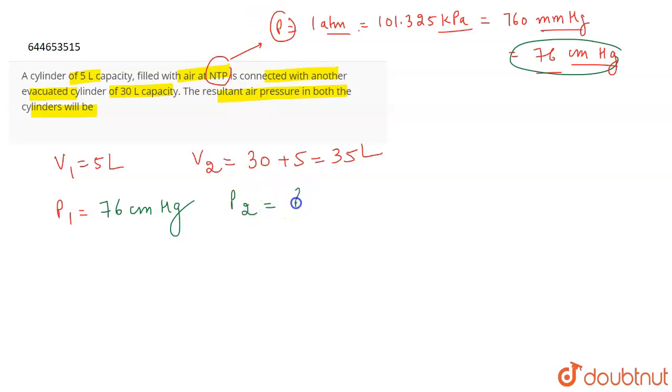Now according to Boyle's Law, pressure is inversely related to volume, right? Pressure is inversely related to volume, or you can say that PV is a constant. So if you have two pressures and volumes, it can be written as P1 V1 is equal to P2 V2.